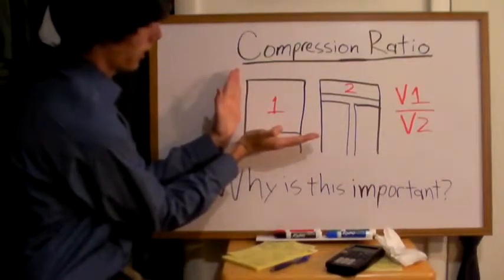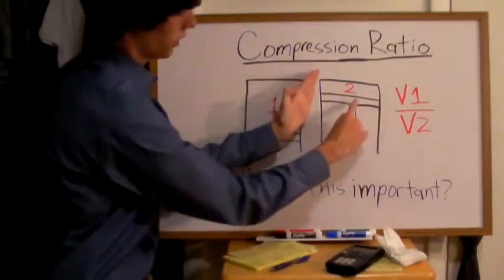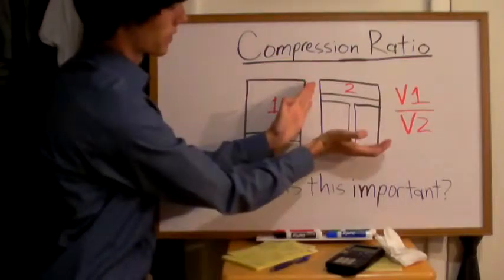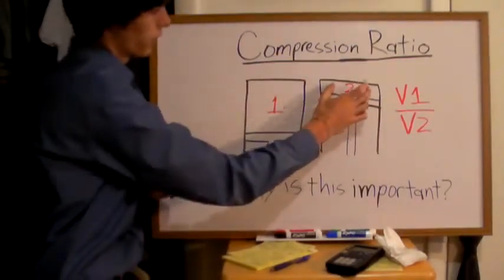Now then the next step is to compress the air in here and the piston is going to move up as you can see here. Step one, step two. Now as this moves up it compresses the air in here and now you've got a different volume.